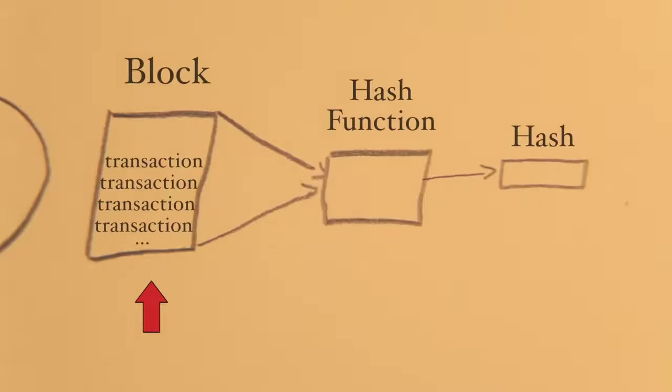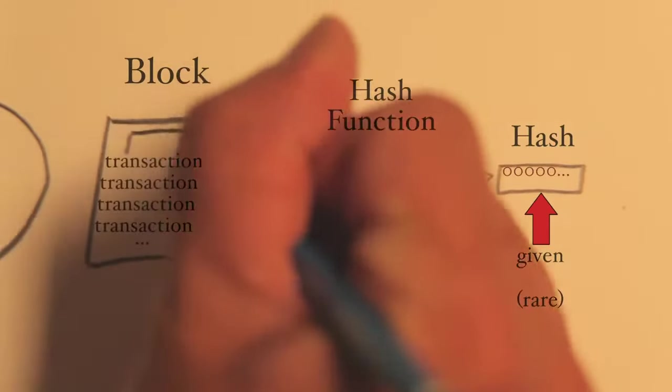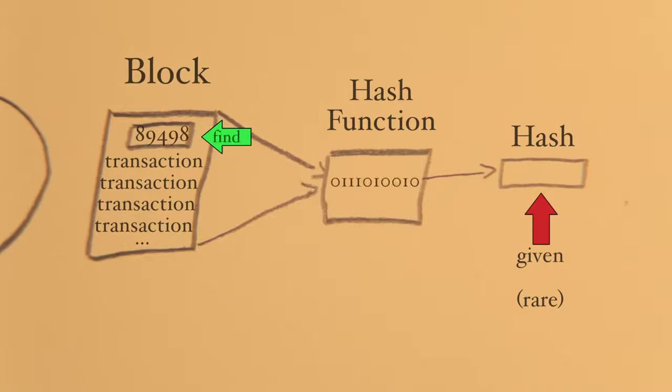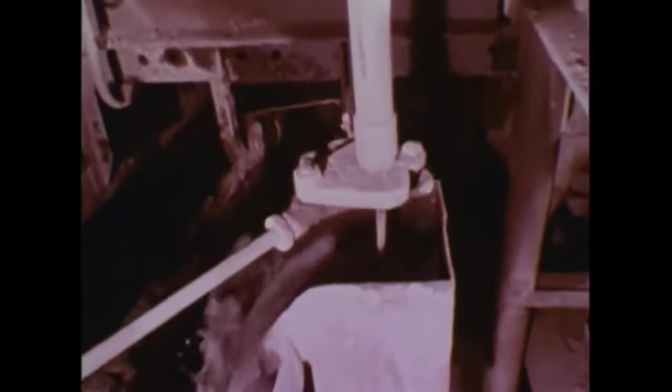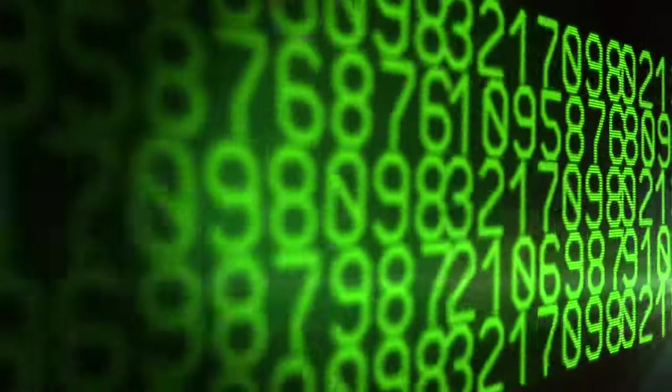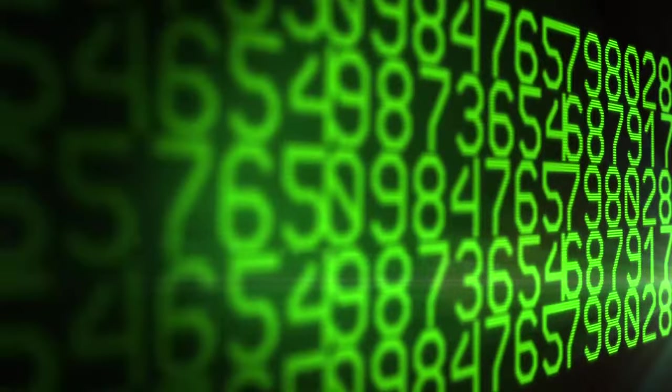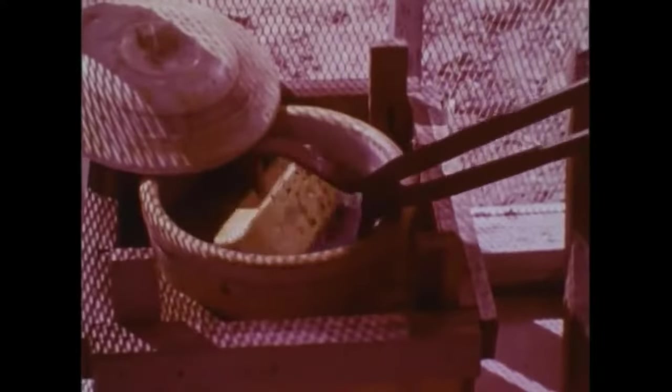Because for every block, the Bitcoin software specifies the form the hash must take, which is a small number the hash must be less than and is an extremely rare occurrence. And within each block an extra space is included for a number the Bitcoin nodes must find which results in the desired hash format. To find the number which results in the desired hash is like finding a needle in a haystack of numbers. The best the Bitcoin node can do is rapidly guess numbers as fast as they can until they find one which leads to the valid hash format for any given block. And this is what Satoshi refers to as mining. It's a guessing game. The first computer in the network to find a lucky number for a block is said to have mined that block of new transactions.